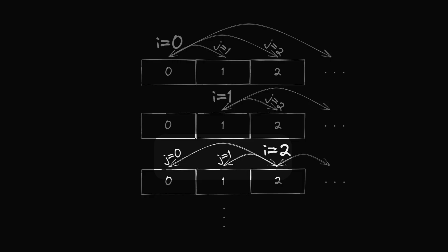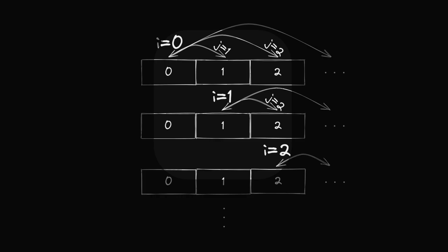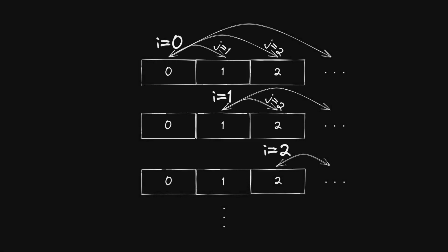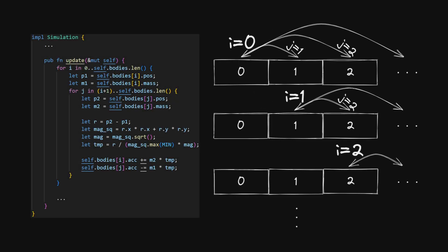And again, we can just skip them, because we've already calculated them in the previous iterations of i. This means that we just have to start the iteration of j at i plus 1 instead of 0.